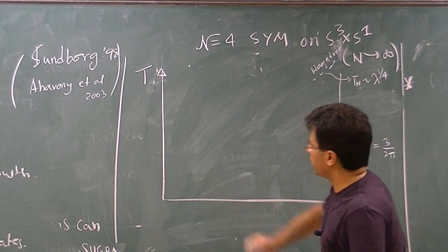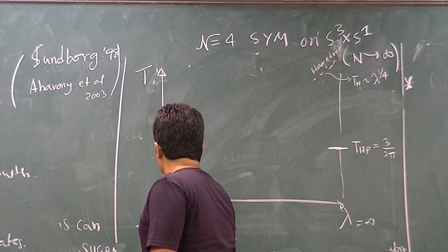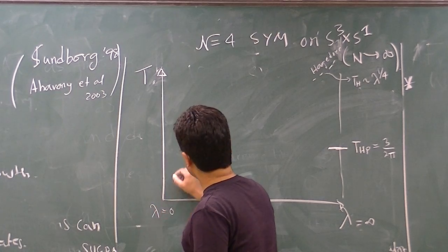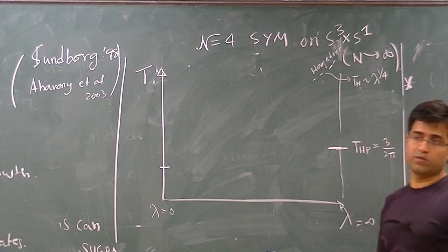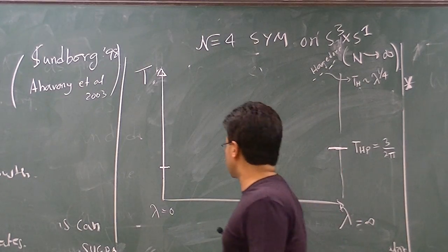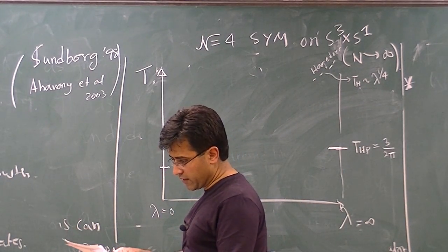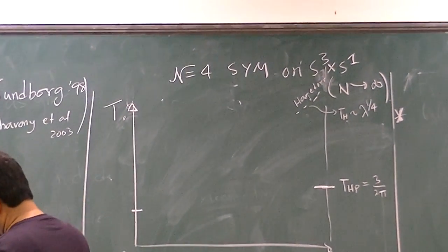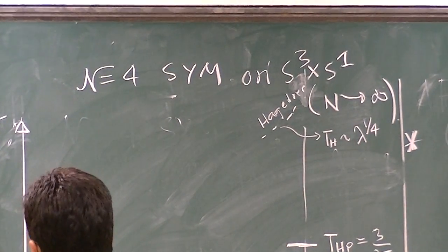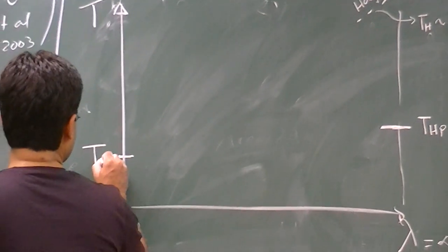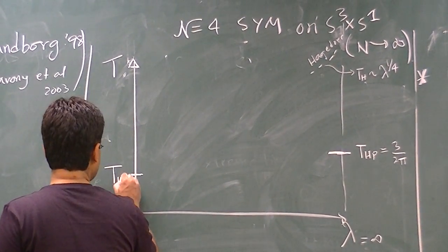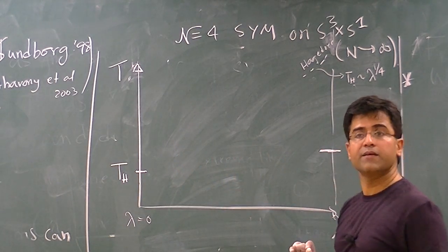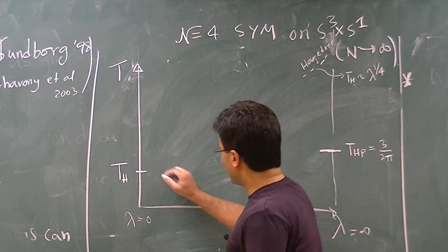We don't know what happens in the middle. What we know at lambda equals zero, and as I said I'll briefly illustrate this tomorrow, is that at lambda equals zero, there is another phase transition which is first order. That's the phase transition of the free theory that occurs at a different temperature. I don't have it exactly, but it's a known temperature. Let me call it PH. And this temperature happens to be slightly lower than that. And we don't know what happens in between.